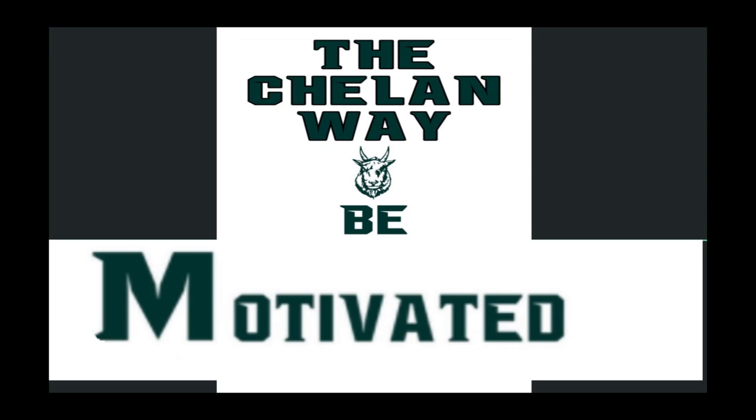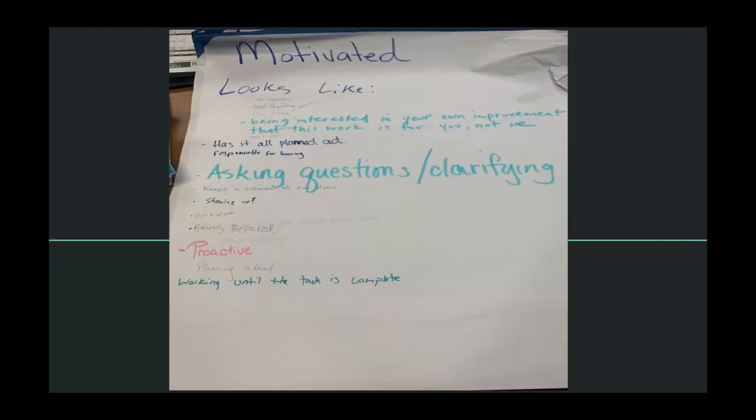So earlier this year, when we came back together in August as teachers to do some work to get ready for school, we did some brainstorming about what motivated looks like. And here's what your teachers had to say. Engaged, self-starting, on time, being interested in your own improvement, that this work is for you, not for the teacher. You have it all planned out, that you're responsible for your own learning. You ask questions and clarifying questions. Keep a calendar of due dates because you want to do your best. You show up. You have a desire to get better. You're prepared. You're proactive. You plan ahead and you work until the task is complete. Those are just a few things that teachers came up with for what it looks like to be motivated as part of the Chelan way.